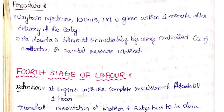In active management, we induce uterine contractions rather than waiting for spontaneous placental delivery. The fetus is expelled out and then the placenta and its membranes are expelled out. The third stage lasts approximately 30 minutes for primigravida and 15 minutes for multigravida.